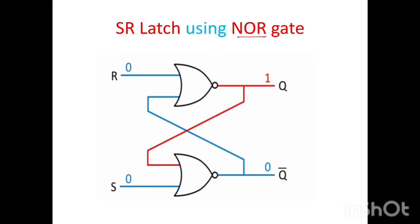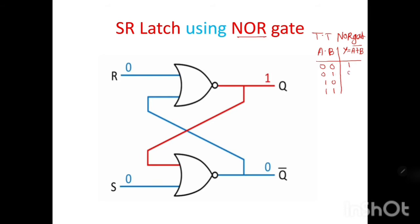Before studying this SR latch, we have to consider the truth table of the NOR gate. In a two-input NOR gate, output y is equal to (a + b) complement. As there are two inputs, four combinations are possible. For inputs 0-0, output is 1. If one of the inputs is 1, the output goes to 0.